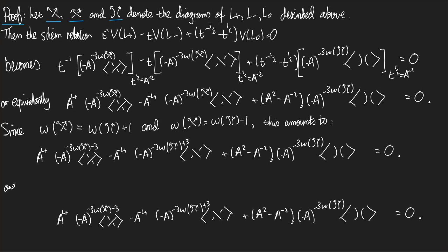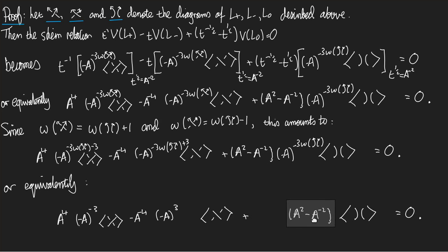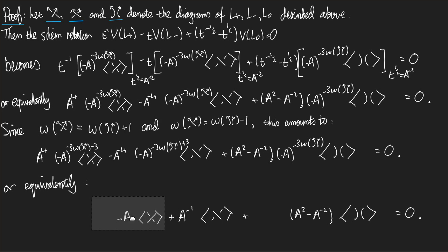Now we can cancel out all the minus a to the minus three times writhe of the smooth crossings factors. After simplifying, the a to the minus four times minus a cubed terms give plus a inverse, and the a to the four times minus a to the minus three gives minus a. So this simplified equation is what I want to prove.